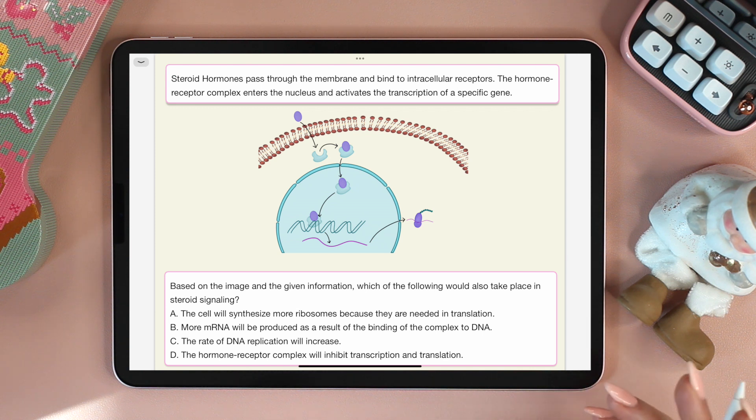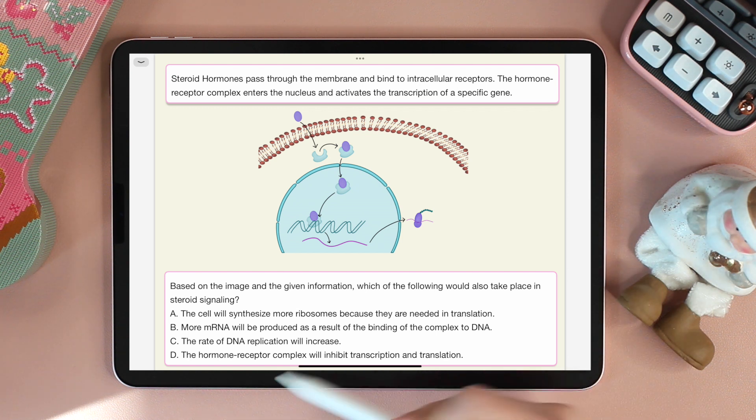Choice C talks about DNA replication, and here we're not talking about DNA replication. Rather, we're talking about transcription and translation. Choice D is not entirely wrong because sometimes a hormone receptor complex could inhibit transcription. It's a way of turning off a gene. But the question specifically says that it activates the transcription of a specific gene, so that's why choice D cannot be the answer in this question.